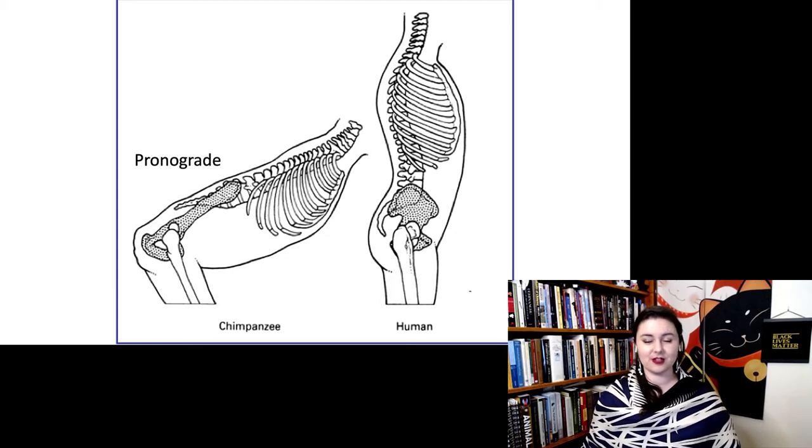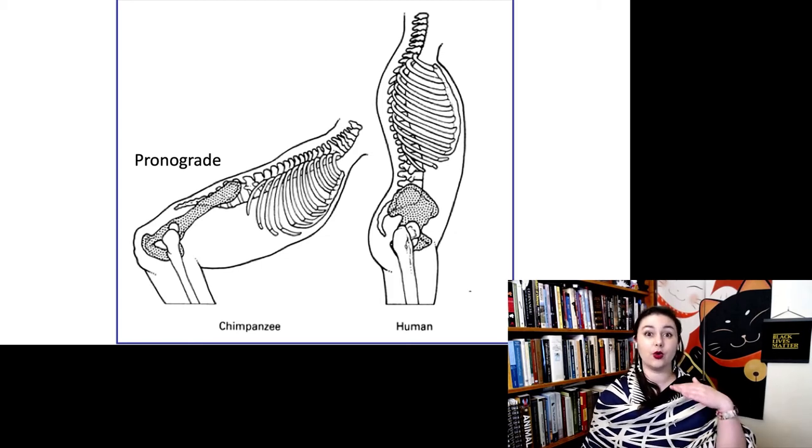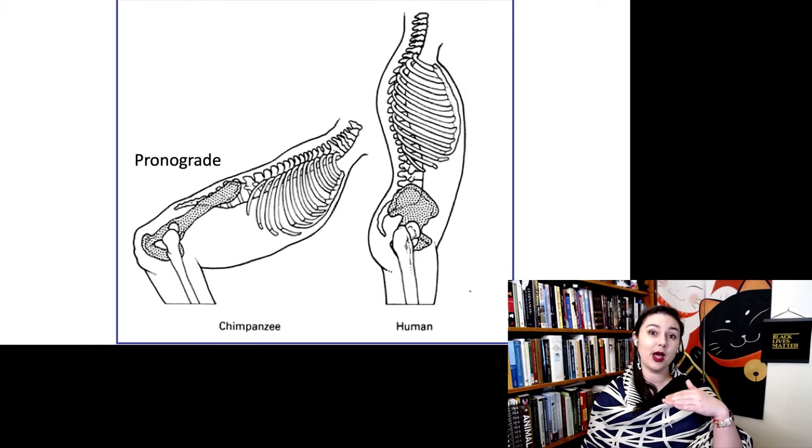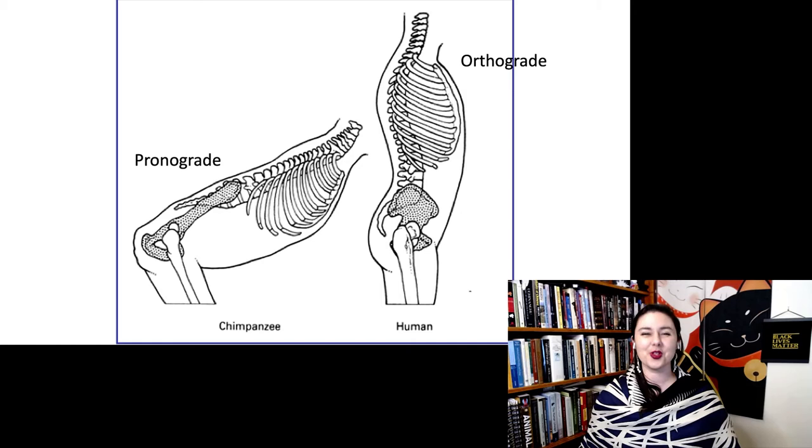We also describe these different postures as pranograde when your trunk is about horizontal. It's a little bit angled here, but it's closer to horizontal than vertical. And then orthograde is when you have a vertical trunk here.